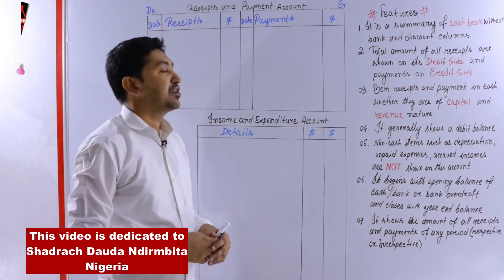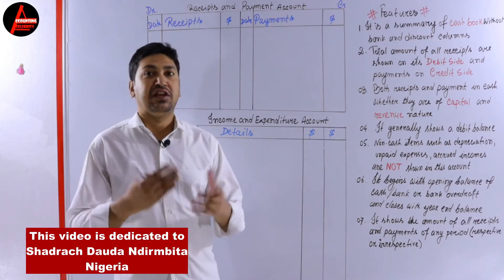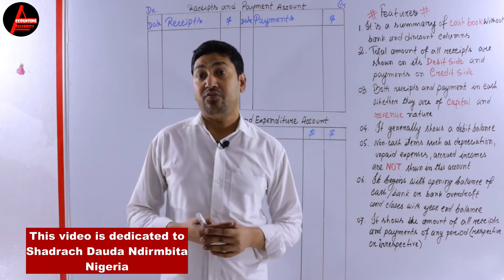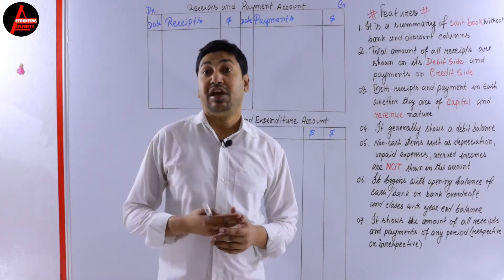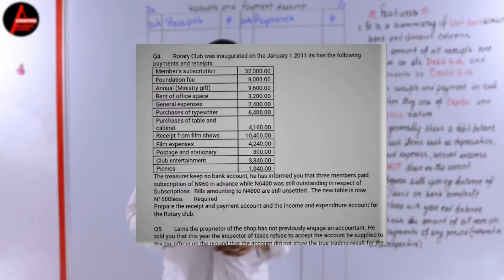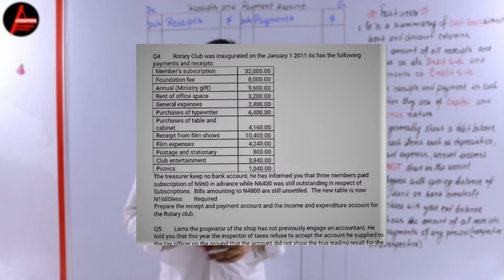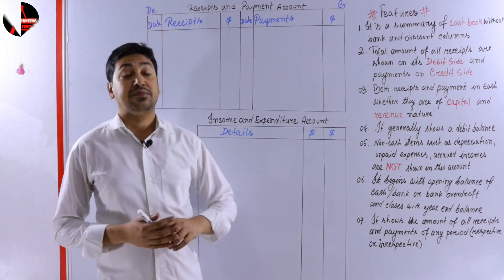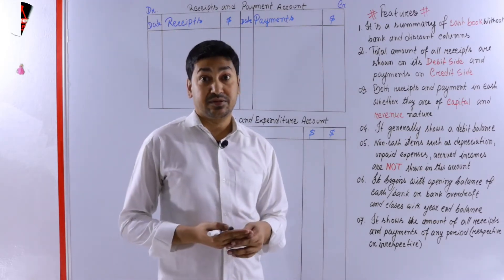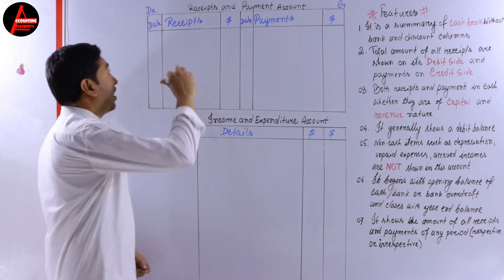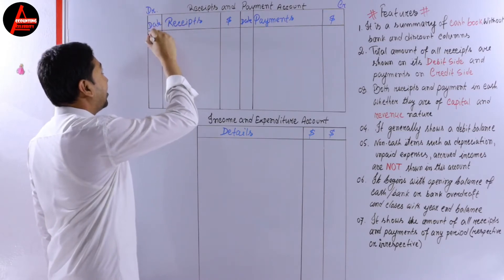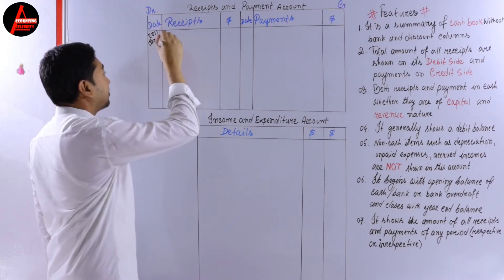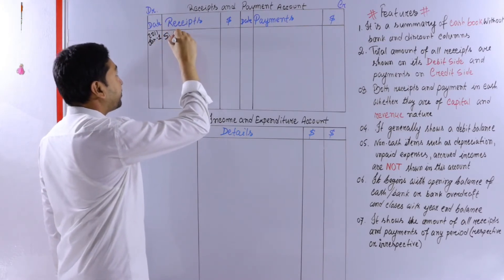Now look at the question on the screen. This question is sent by one of our students, Satraj, who is from Nigeria. The Lottery Club was inaugurated on January 1st 2011 and it has the following payments and receipts. The first item is member subscription - it is a receipt, so we write it on the debit side. Date is January 2011. Write subscription: two thousand dollars.